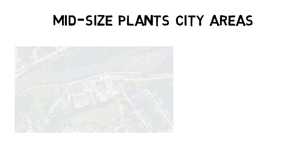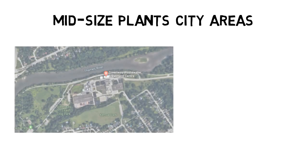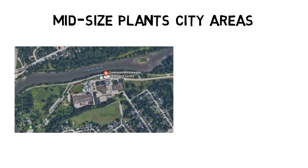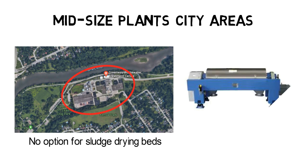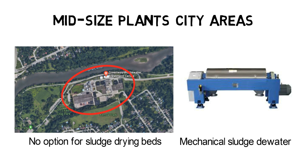Sludge drying beds are a low-cost solution for sludge dewatering. However, they require a lot of space and cause odors. Therefore, in areas with a denser population, sludge is mechanically dewatered, for example with centrifuges or sludge presses.